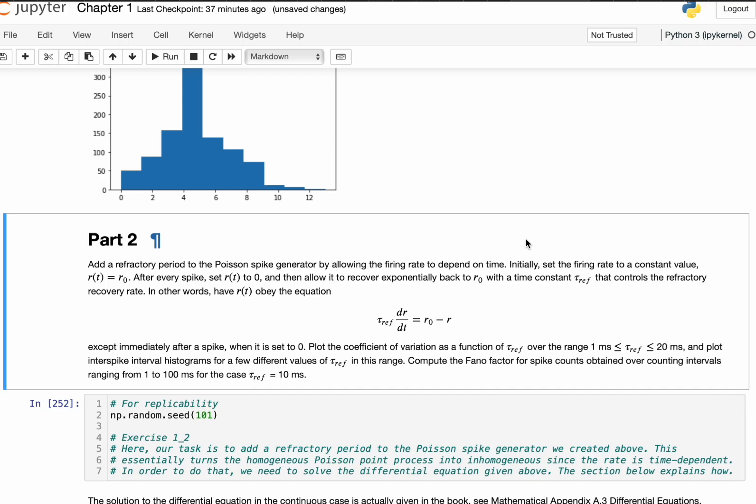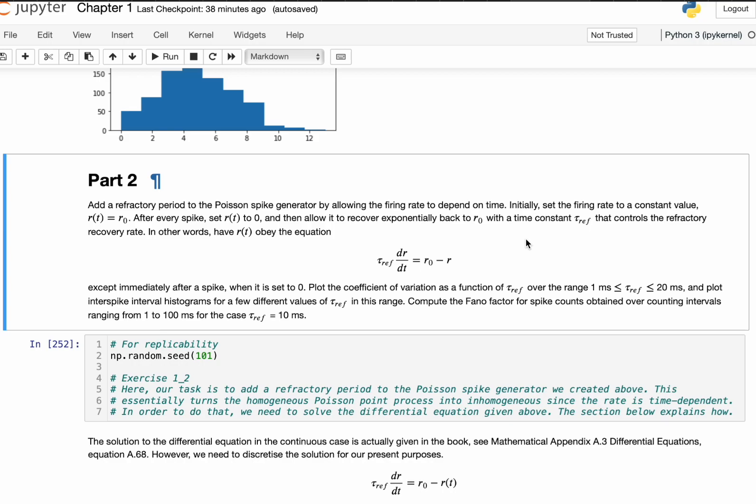inactivation of the sodium channels along the axon initial segment where action potentials are normally initiated. And this mechanism therefore prevents the neurons from firing uncontrollably with no sort of time between the individual spikes. And so that allows them to fire the spikes in a discrete fashion.